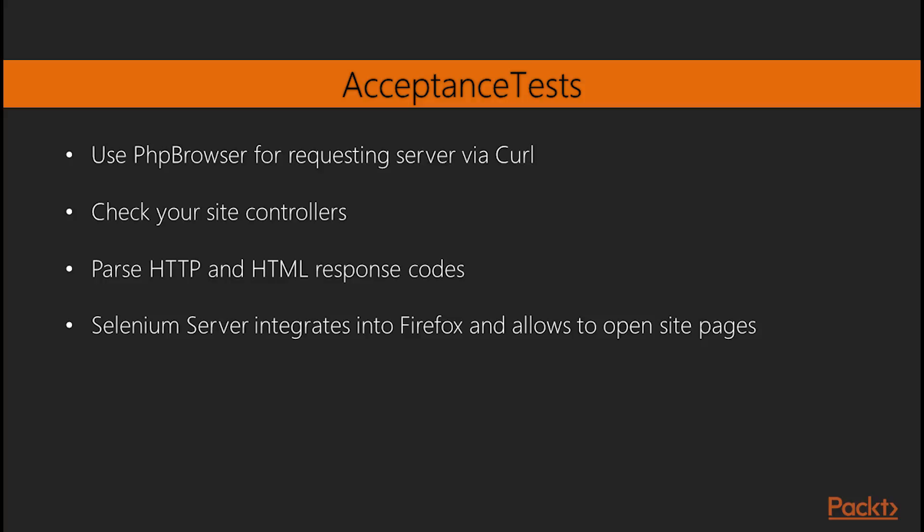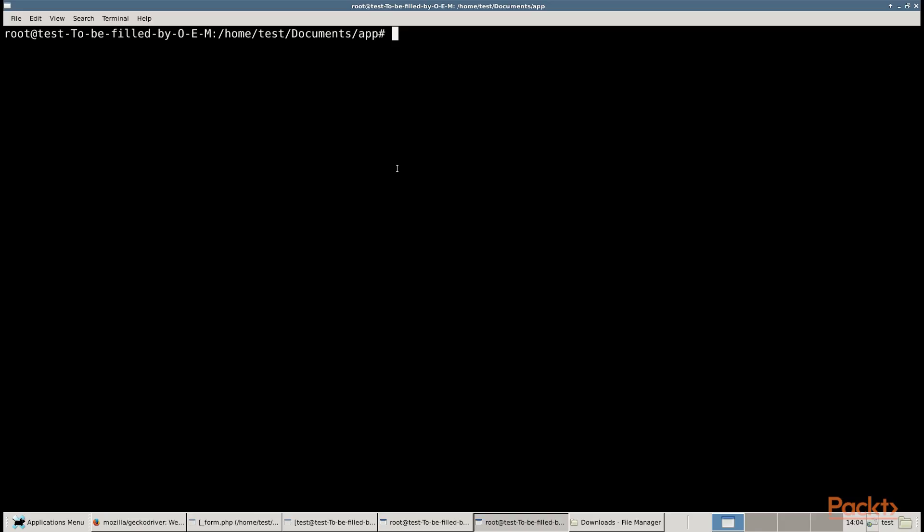Moving ahead, we will look at running acceptance tests. In acceptance tests, you can use PHP browser for requesting the server via curl. It helps check your site controllers and to parse HTTP and HTML response codes. But if you want to test your CSS or JavaScript behavior, you must use a real browser. Selenium Server is an interactive tool which integrates into Firefox and other browsers and allows you to open site pages and emulate human actions. For working with a real browser, we must install Selenium Server. It requires the full Codeception package instead of basic.